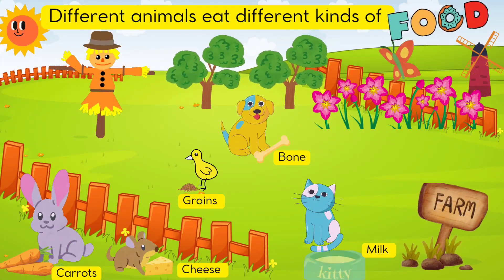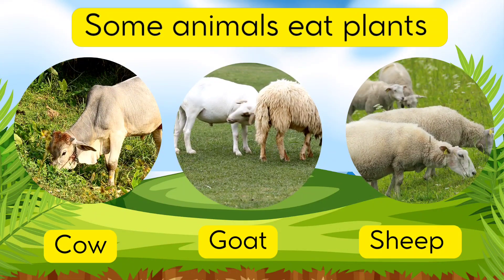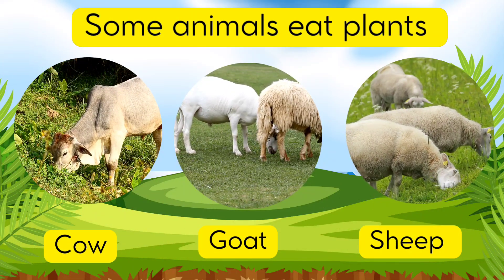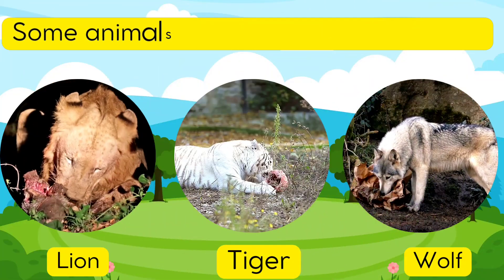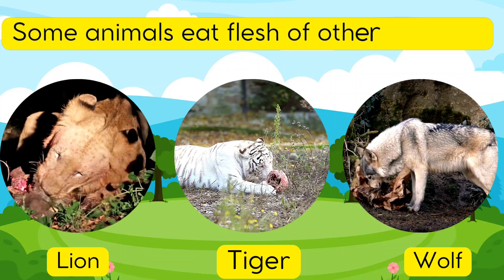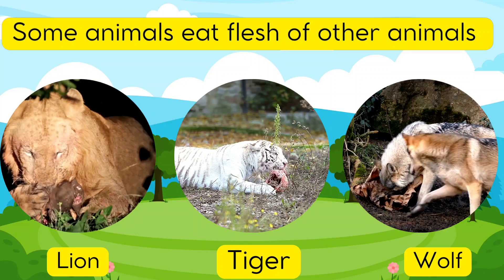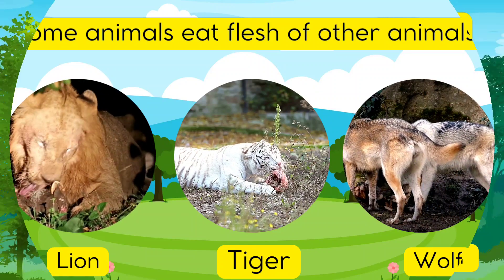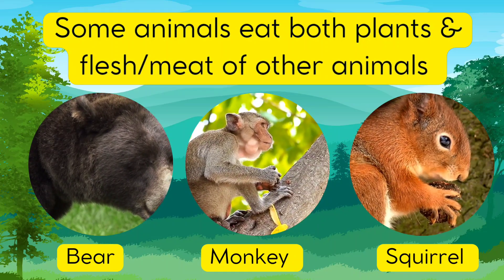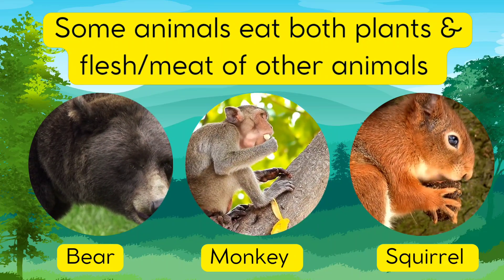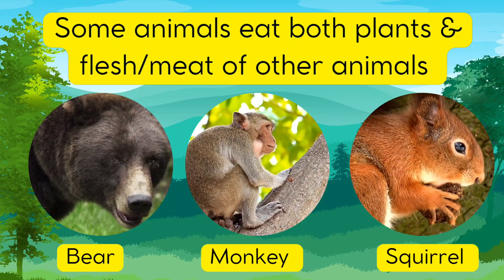Different animals eat different kinds of food. Some animals eat plants, like cow, goat and sheep. Some animals eat the flesh of other animals, like lion, tiger and wolf. Some animals eat both plants and flesh or meat of other animals, like bear, monkey and squirrel.